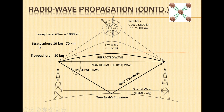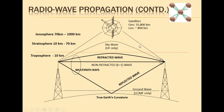We have troposphere from ground to 10–20 km, stratosphere from 10 to 70 km, and ionosphere from 70 to approximately 1000 km. Beyond that is free space. Satellite transmission is also relevant here — for example, 6, 7, 10, and 11 GHz channels are used for satellite, and the same channels may be used for microwave point-to-point communication as well.